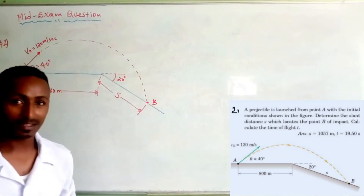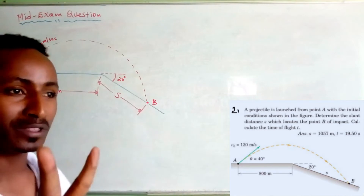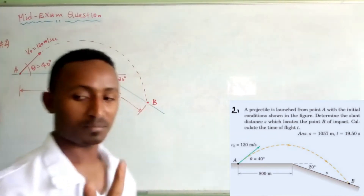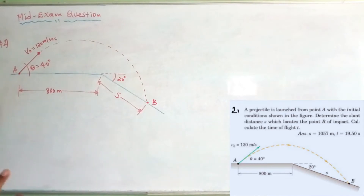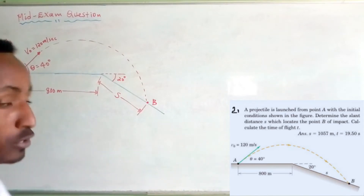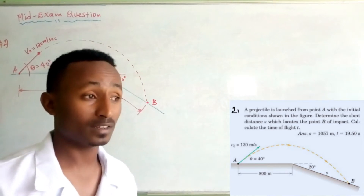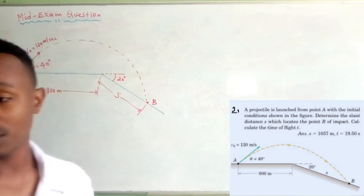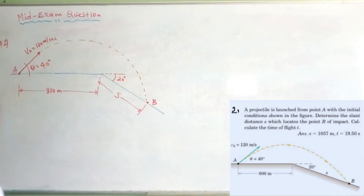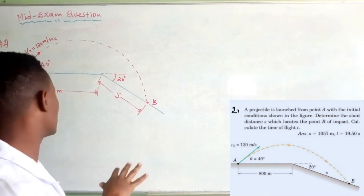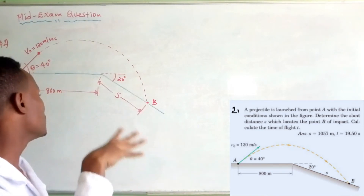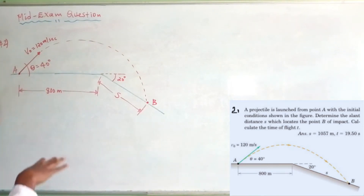The next question involves projectile motion. This is a linear motion, which is a projectile motion. This is the diagram of the projectile, used as a puzzle or platform to solve the problem.